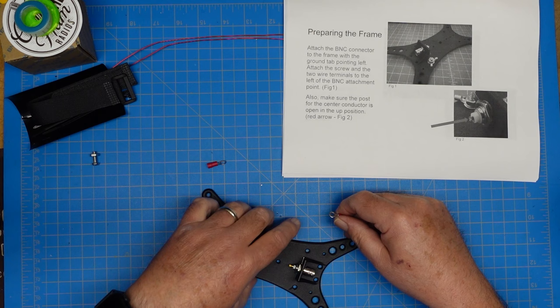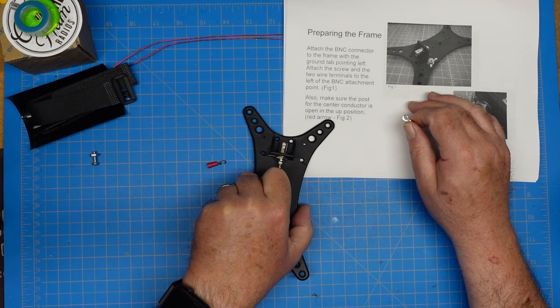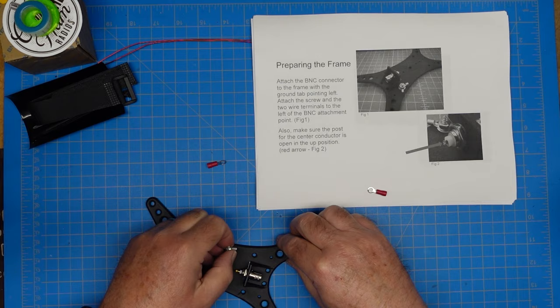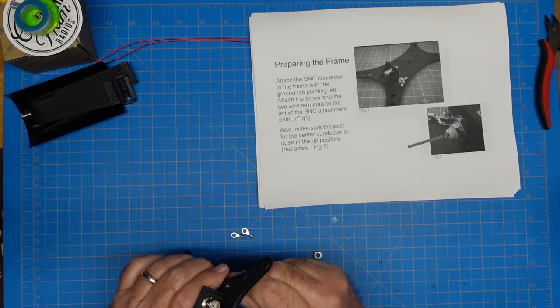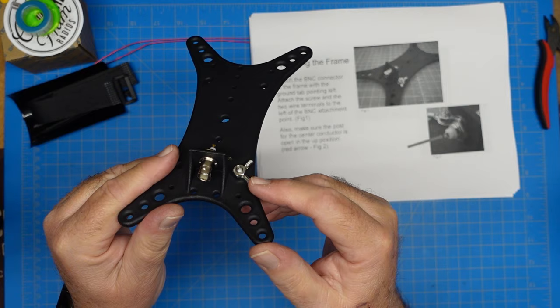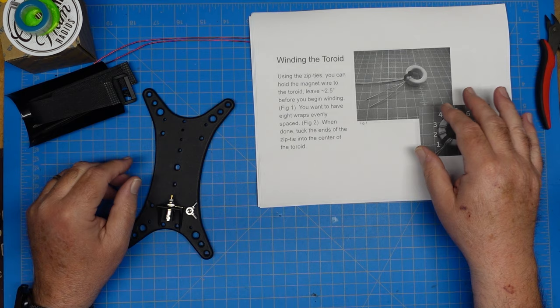Attach the screw and the two wire terminals to the left of the BNC attachment point. Chuck is talking about putting on our screw and terminals up here in this hole. You should end up with something that looks like that - our grounding tab and nut with the wires, lining up with Chuck's picture.